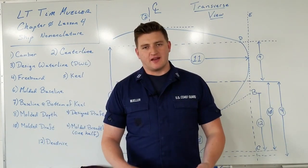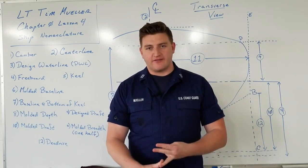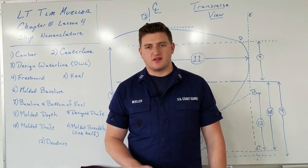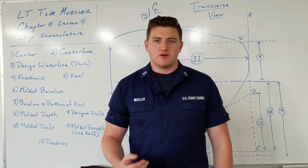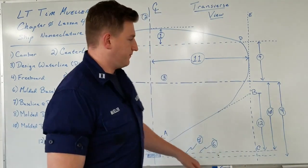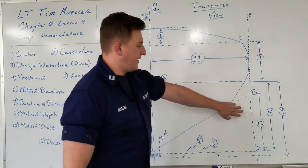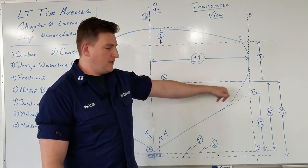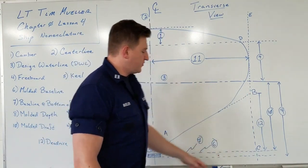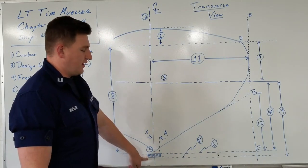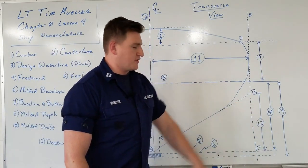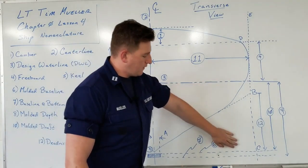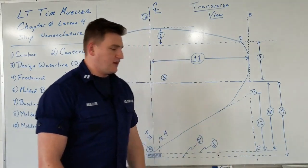There are several different types of draft: standard draft, design draft, navigational draft, as well as drafts located on a Plimsoll mark, which will be introduced in a later series. For now, we'll go over molded draft, number ten. Like design draft, it starts at the design waterline, but it does not include the height of the keel. So molded draft goes from the design waterline all the way down to the molded baseline.